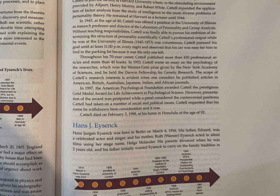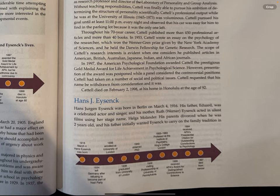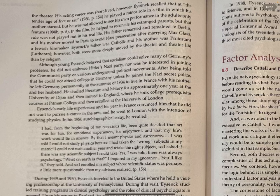Hans-Jürgen Eysenck was born in Berlin on March 4, 1916. His father, Edward, was a celebrated actor and singer, and his mother, Ruth Werner Eysenck, acted in silent films under the stage name Helga Molander. His parents divorced when he was two years old, and his father initially wanted Eysenck to carry on the family tradition in theater. His acting career was short-lived, however. Eysenck recalled that at age five or six, he played a minor role in a film starring his mother, but he was not allowed to see his own performance. His father remarried and remained in Berlin, and his mother moved to Paris to avoid Nazi persecution after marrying Max Glass, a Jewish filmmaker.